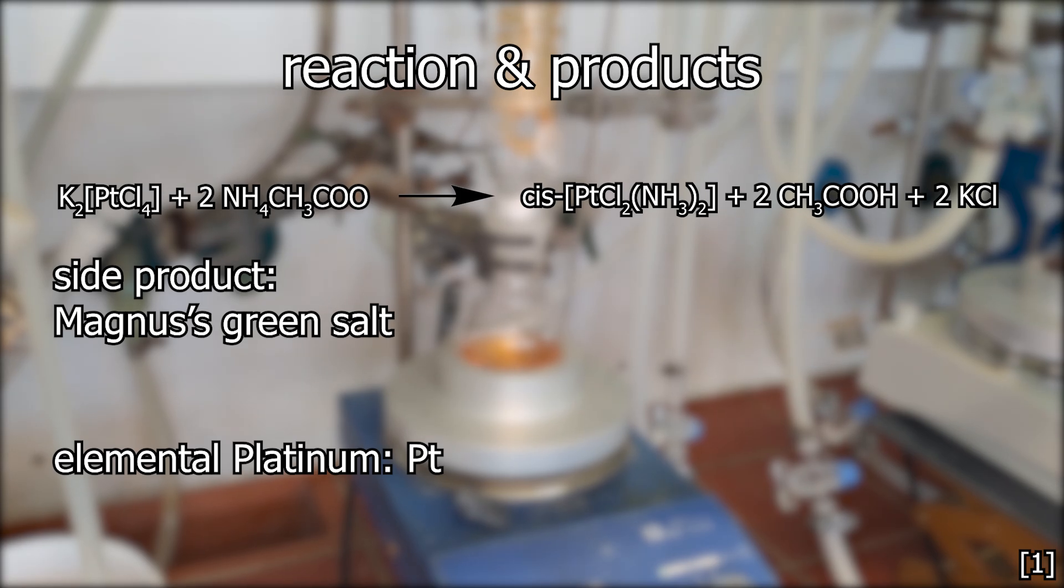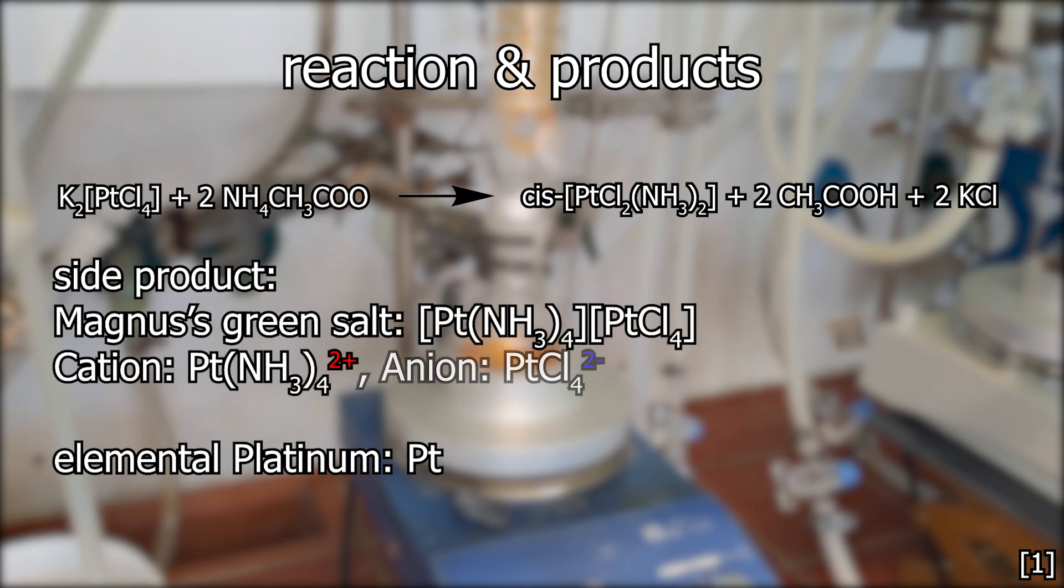Magnus green salt, which I just mentioned, has the following composition. This is exciting because we have platinum in both the cation and the anion. Green is actually rather unusual for platinum compounds.